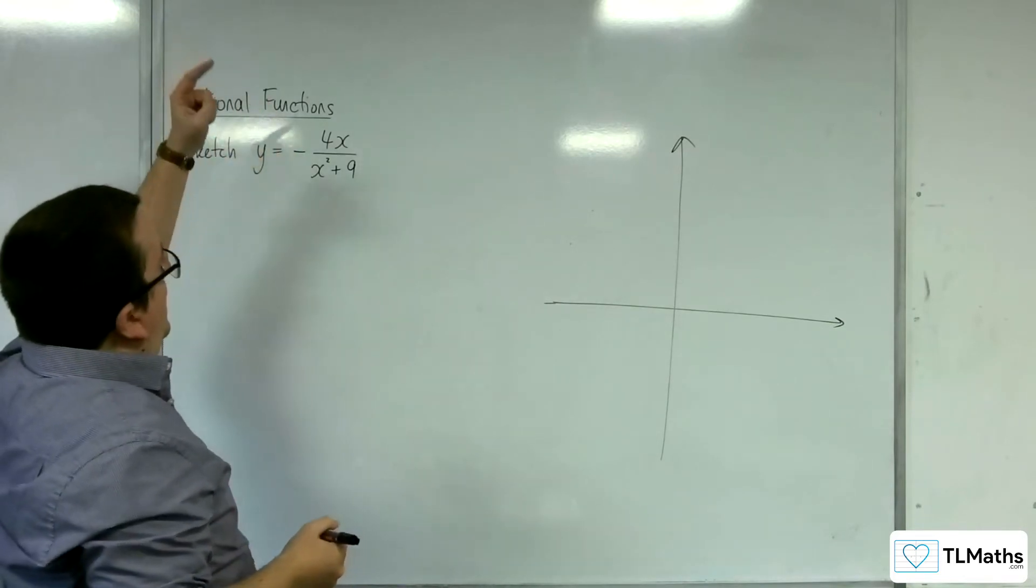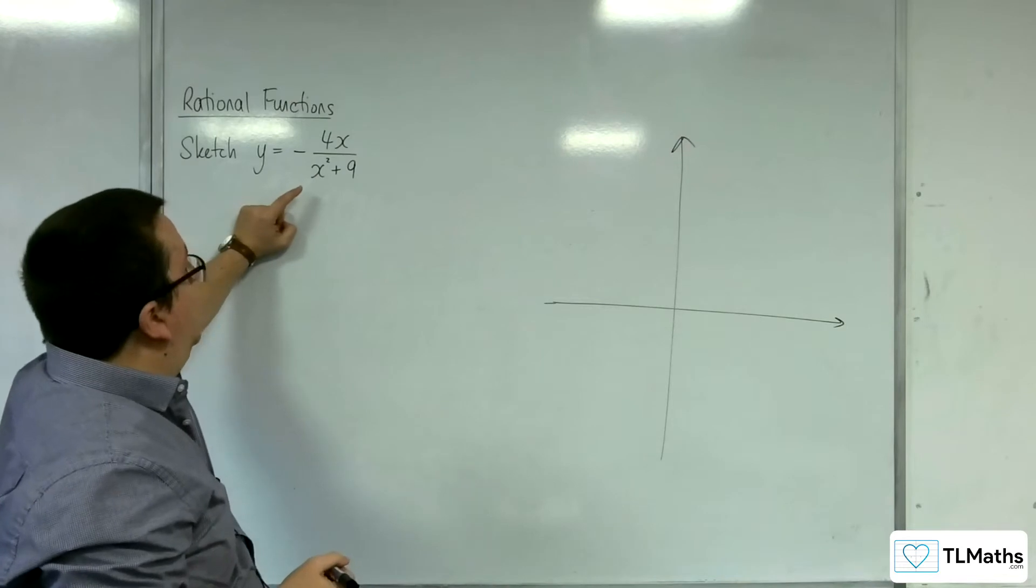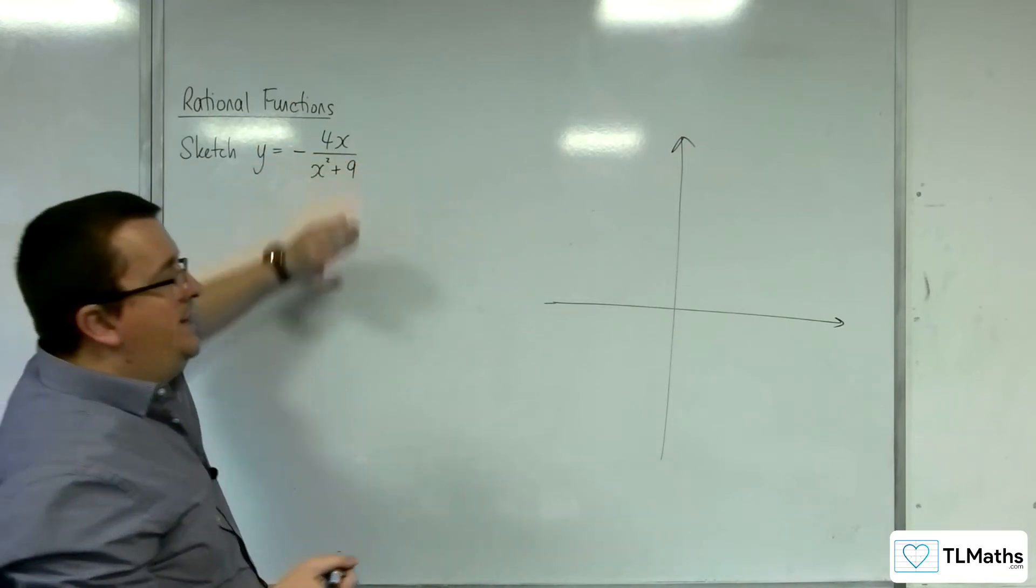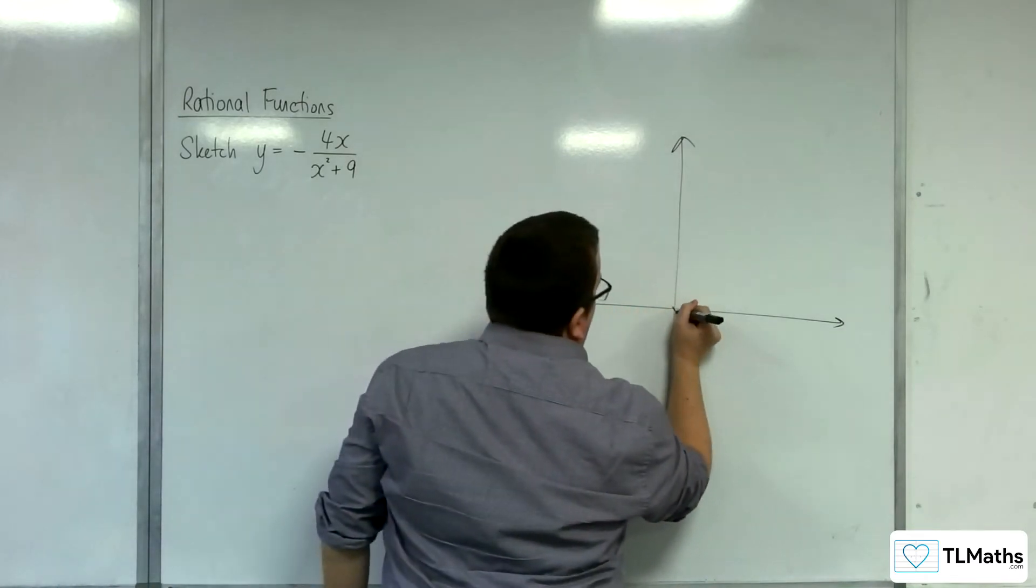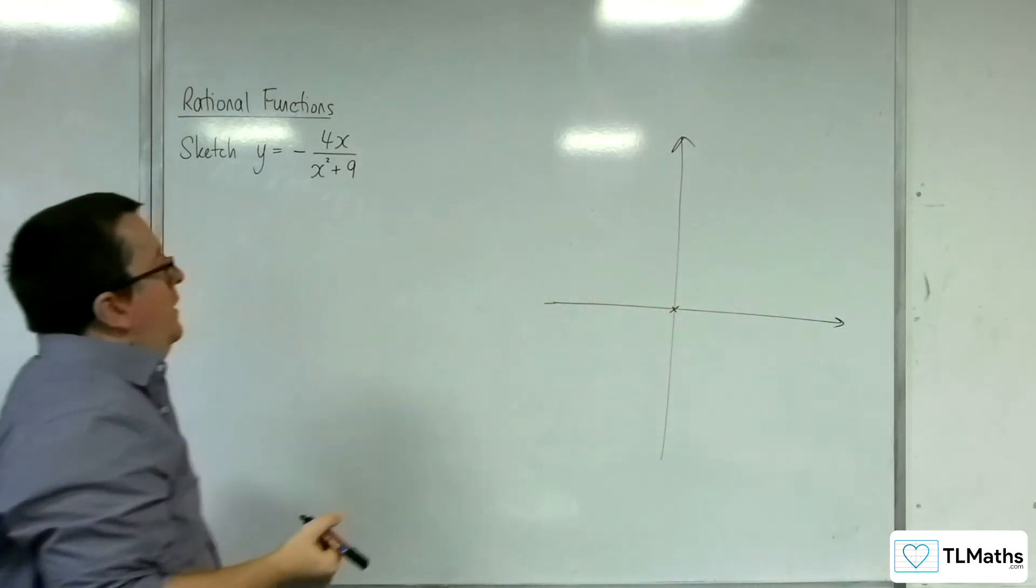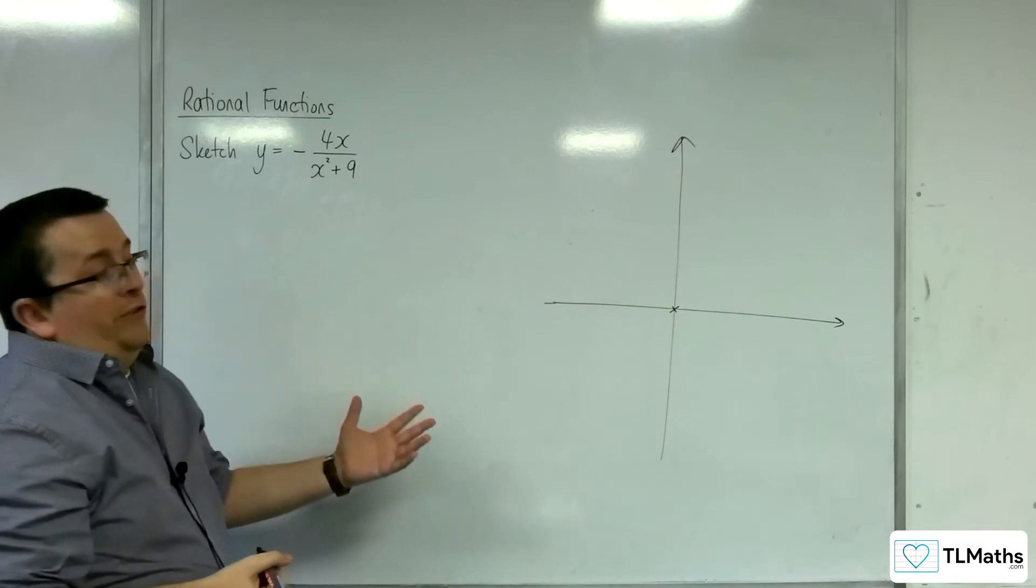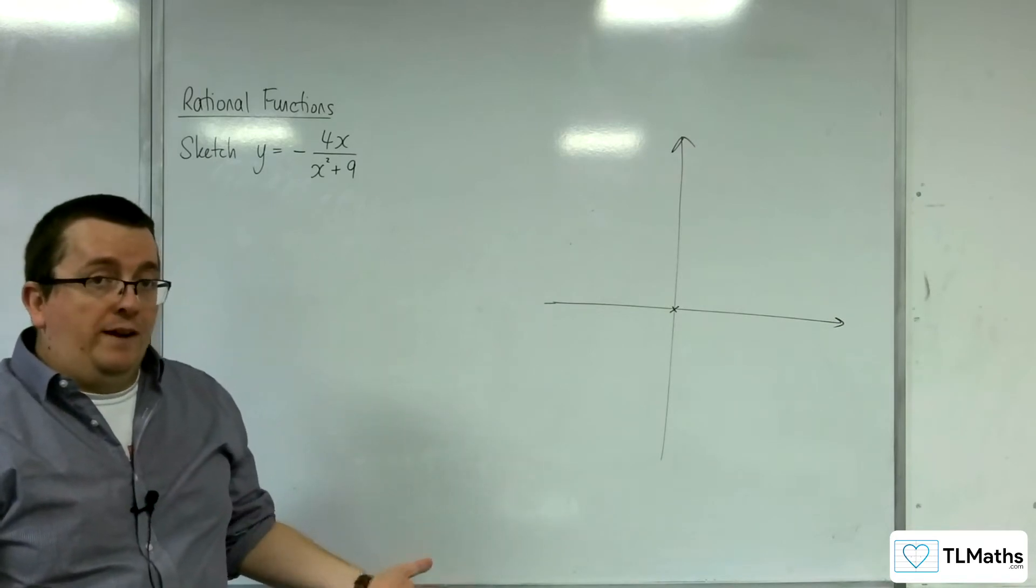Next up, where does it cross the x-axis? That's when y is 0, when the numerator is 0. And so that will be when x is 0. So it's going through the origin. Now, that also answers the question as to where it crosses the y-axis. So crossing through the origin.